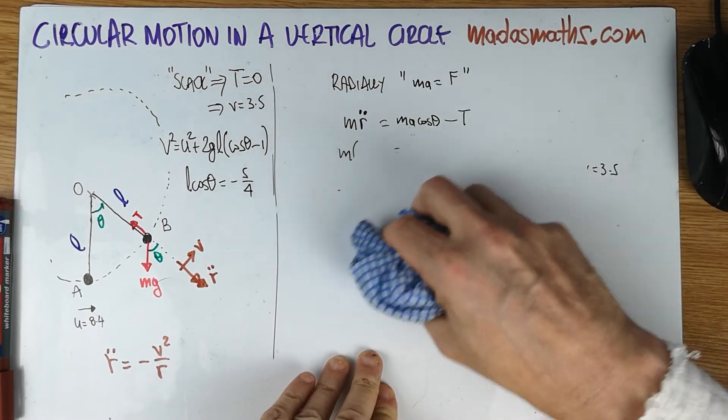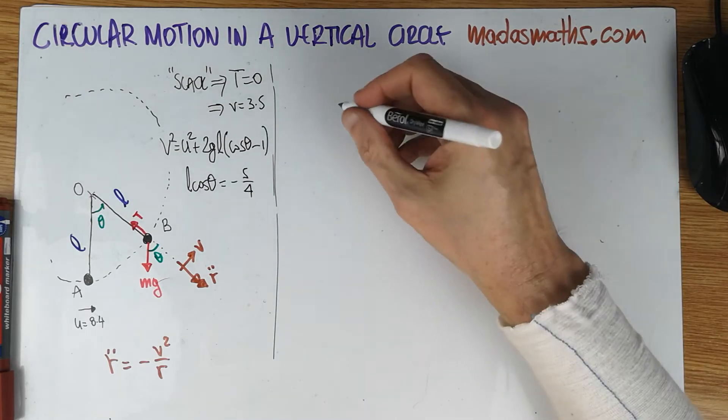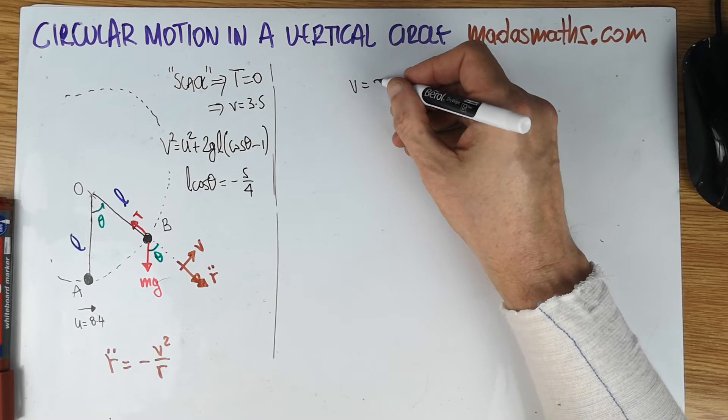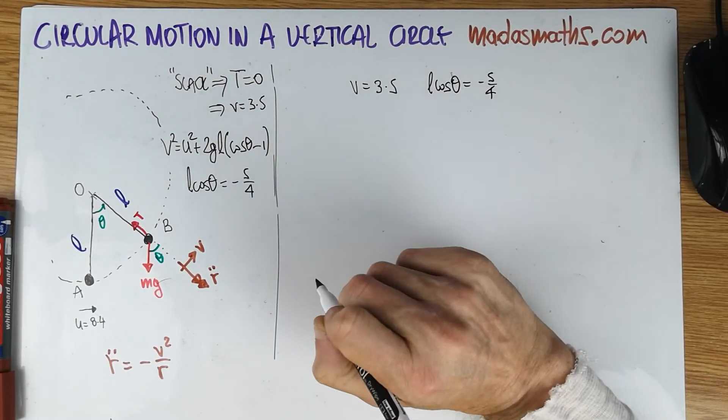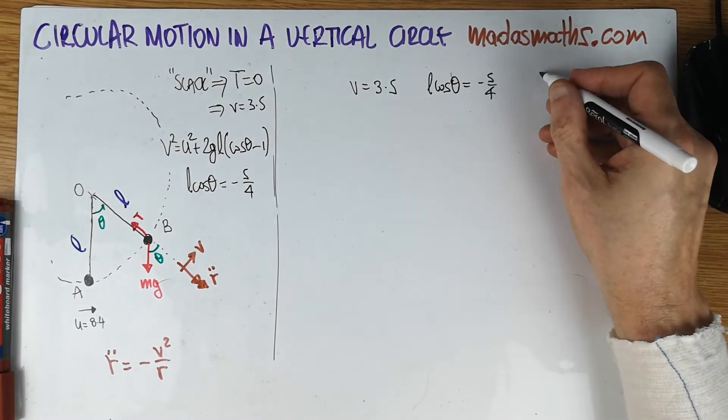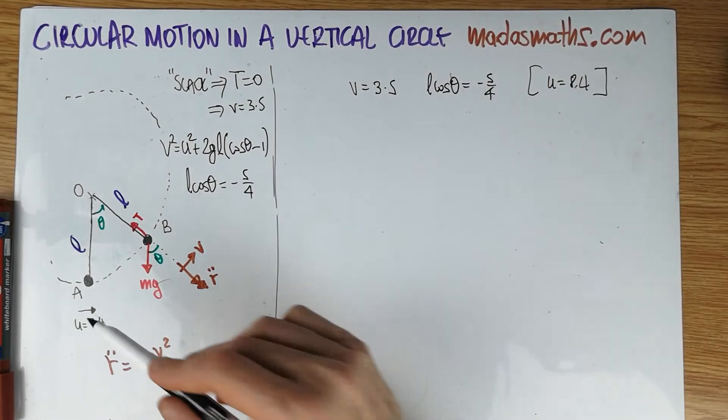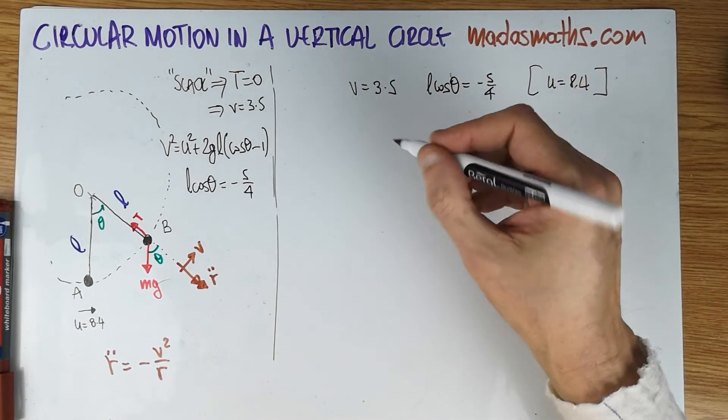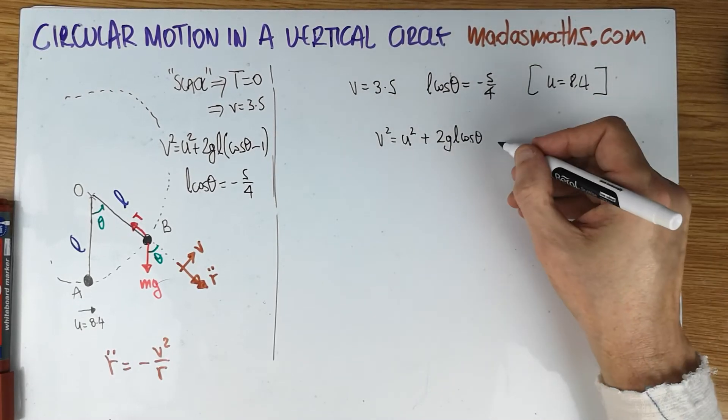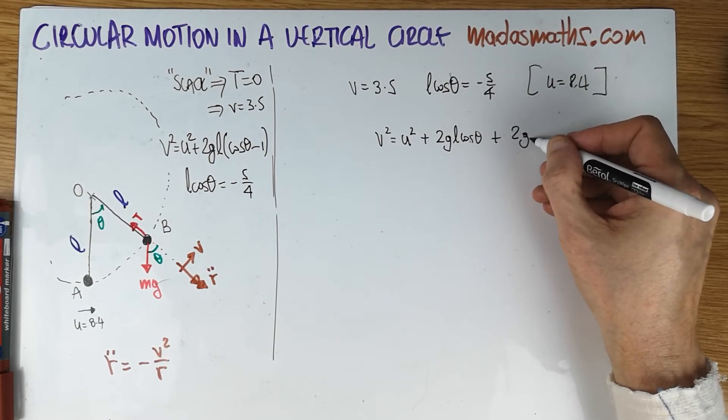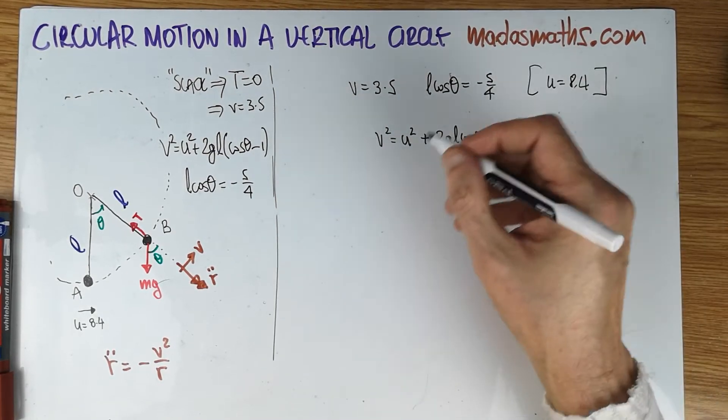And from these results now, that and that combined, we can finish the problem. We can find the value of L because of course the same thing will apply to the other equation. So I'm going to say when V is 3.5, L cos theta is minus five quarters. When that is true, that is true. And of course, let's not forget U is 8.4. And this has been given, of course, to the problem from the beginning. So all of these quantities are known. So I'm going to take the energy equation.